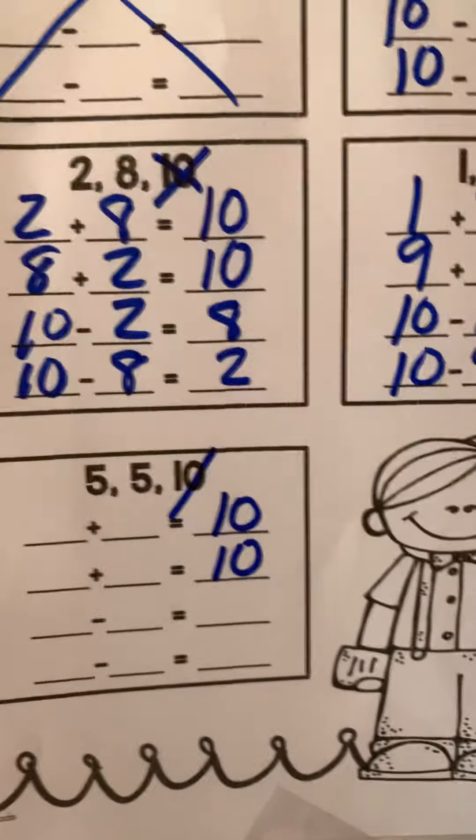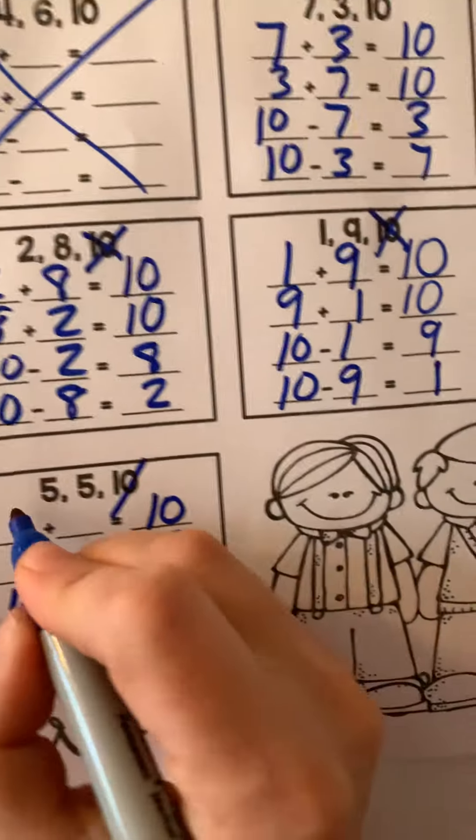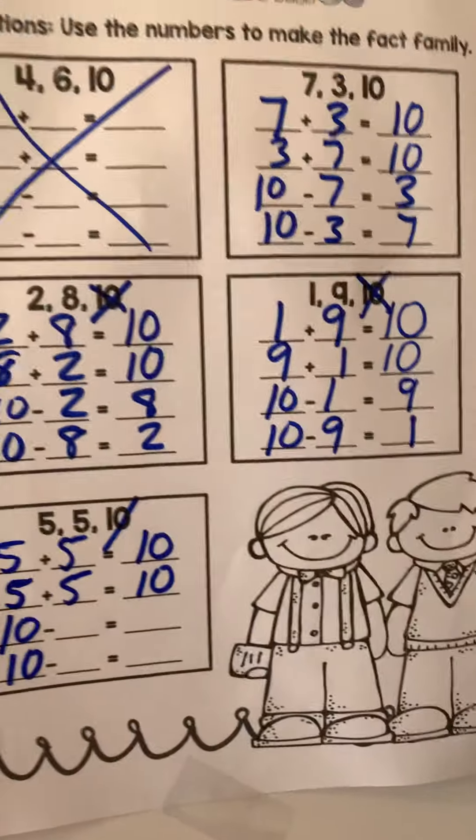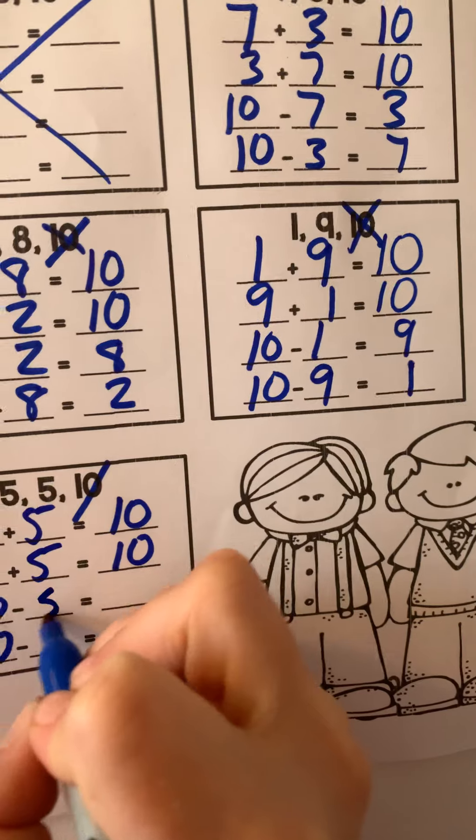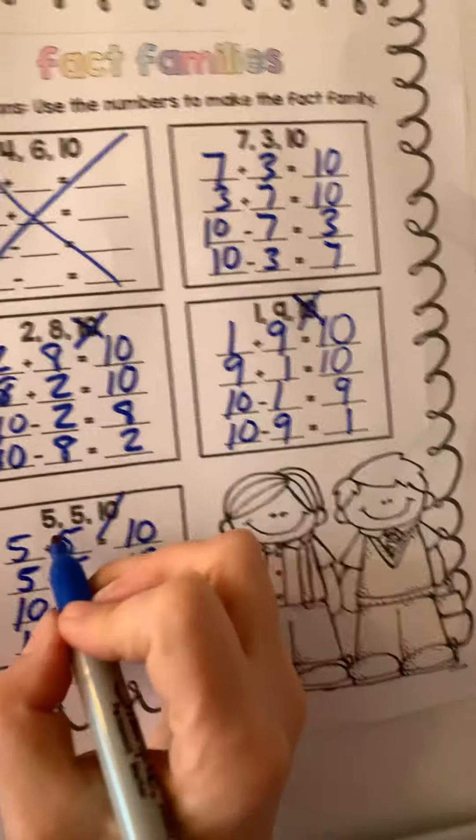Subtraction starts with the biggest number, Jason. 10, 10. And we used it. So 5 plus 5 is 10. Even if you flip it because it's a double, it's still 5 plus 5 is 10. 10 minus 5 is 5. And 10 minus 5 is 5 even. And I flipped it because we left no other numbers in.